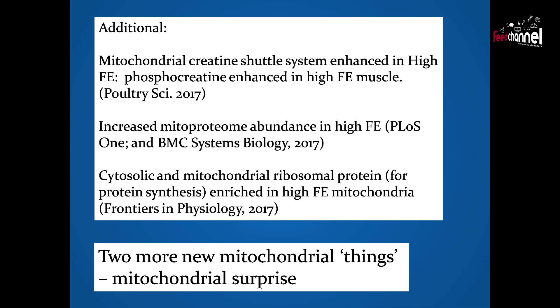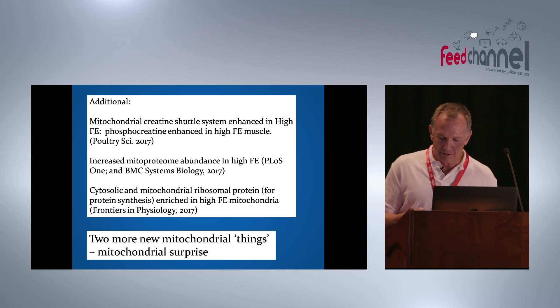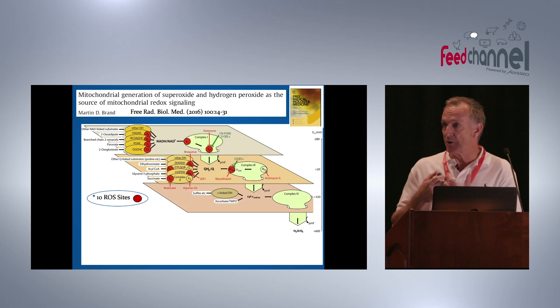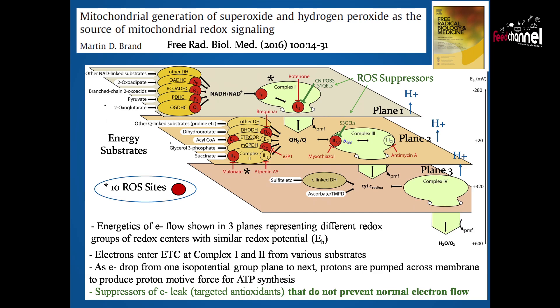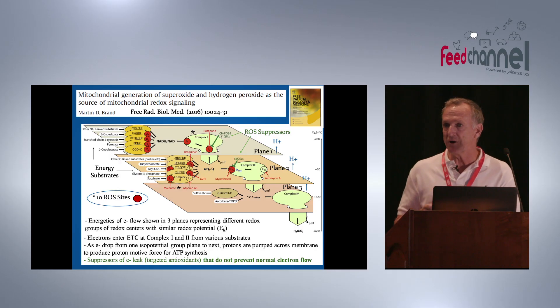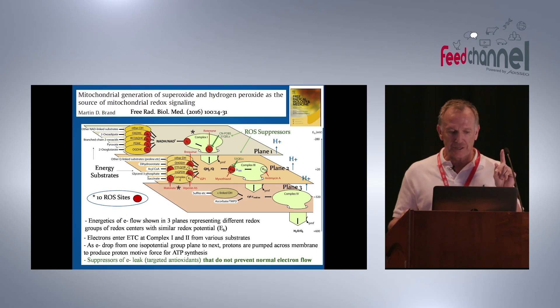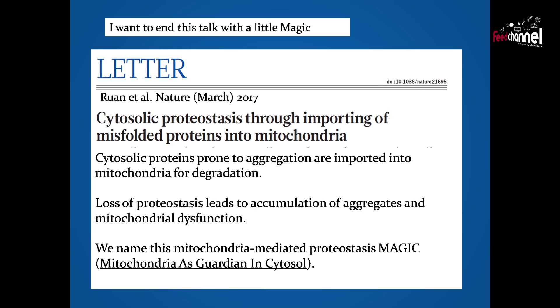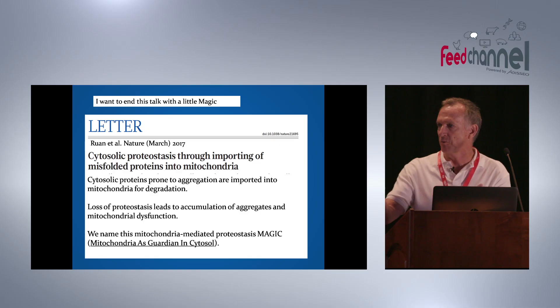A couple of other recent publications: Martin Brand has shown there are not just three sites of electron leak — there are now 10 identified sites within the mitochondria. His group designed ROS suppressors — antioxidants targeting specific parts of the electron transport chain — with the key advantage that they do not prevent normal electron flow. Finally, a paper from March proposes that mitochondria may play a role in fixing damaged proteins in the cytosol — named 'mitochondria as guardian' or MAGIC — leaving us with a little mitochondrial magic. Thank you.